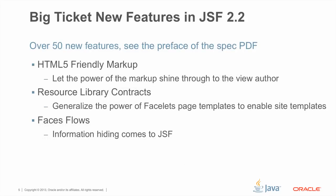There are many new features in JSF 2.2. We're only going to talk about three of them here today: HTML5 friendly markup, resource library contracts, and faces flows.